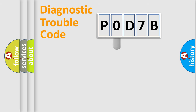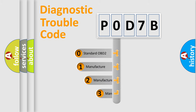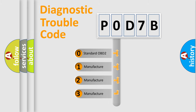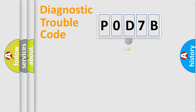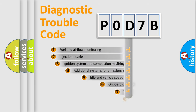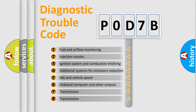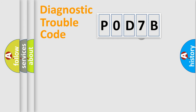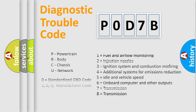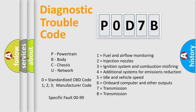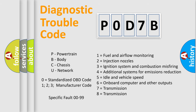This distribution is defined in the first character of the code. If the second character is expressed as zero, it is a standardized error. In the case of numbers 1, 2, or 3, it is a manufacturer-specific error. The third character specifies a subset of errors, and the last two characters define the specific fault within the group. This division is valid only when the second character is zero.